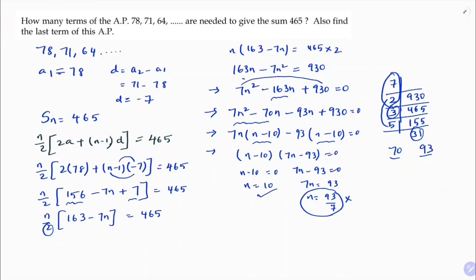So now I need to find the last term. So sum of 10 terms is 465. So the last term will be the 10th term. So we need to find a10. So a10 is a plus 9d, the formula for nth term is a plus n minus 1 into d. Now if you substitute the values, a value is 78 and d is minus 7.